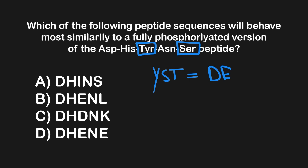Looking at answer choice A, the tyrosine is substituted with isoleucine — that really isn't going to work — while the serine stays the same, so it could still be phosphorylated. Overall, not a great answer, but we'll give it a tentative down vote. In answer choice B, the tyrosine is substituted with glutamic acid, which is good, but the serine is substituted with leucine, which isn't great — so we'll down vote this one as well.